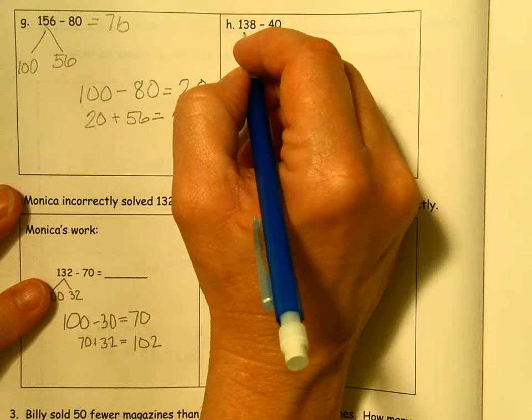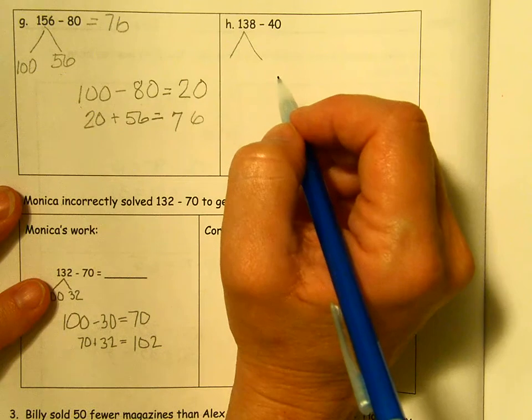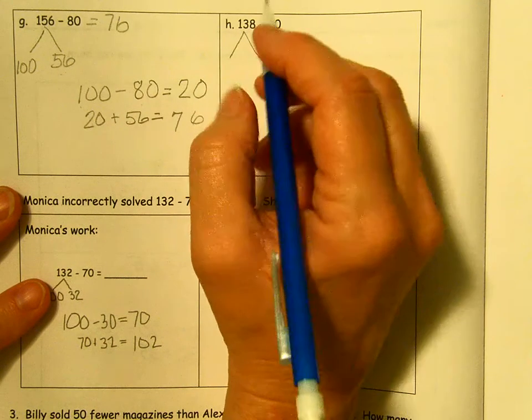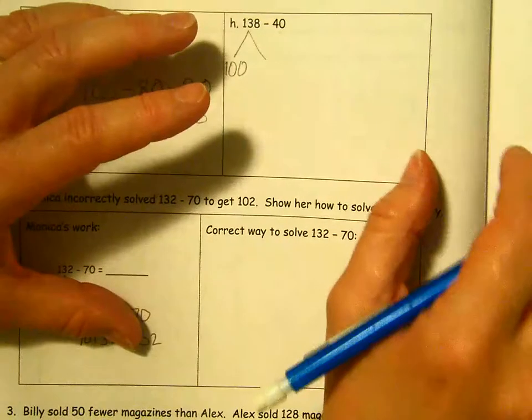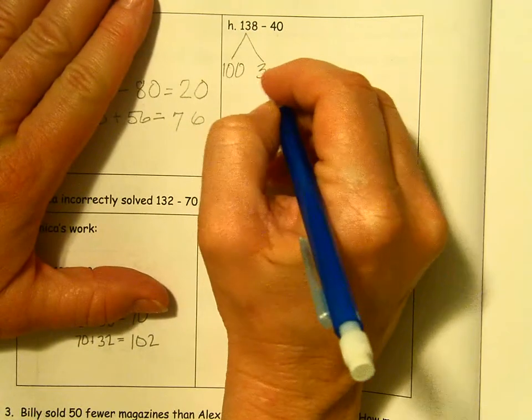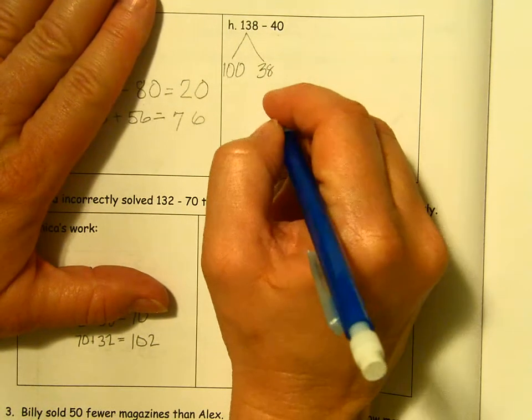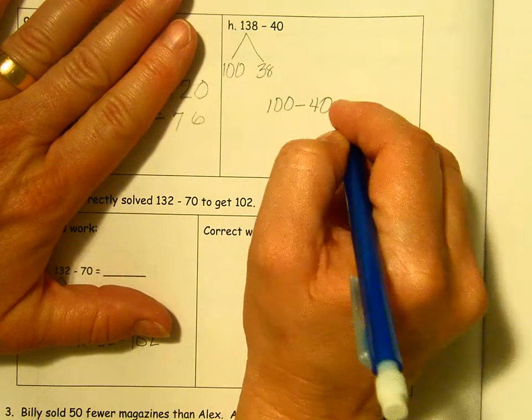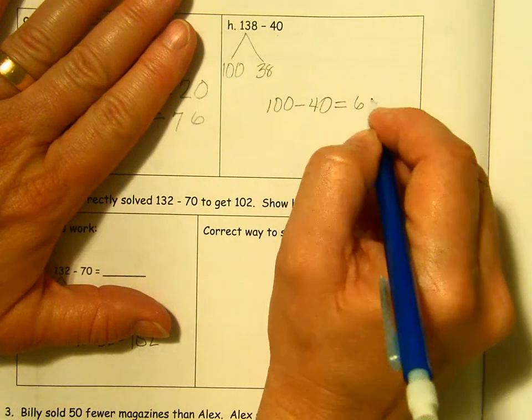Same thing here. We have 138 and we want to take 40 away. It's kind of a difficult subtraction problem. But it's super easy to take 40 from 100. So we're going to break this into two parts. I had 138. I'm going to take 38 and leave them over here for now. And I'm just going to take the 40 away from the 100. I'm just going to leave that 38 over there. So now I'm going to take out the 40 from the 100 that I have. 10 tens minus 4 tens.